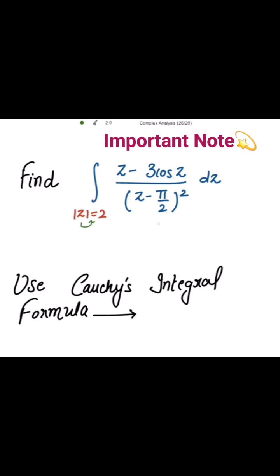For that, we need to check first that on putting the denominator equal to 0, what point we are getting. We are getting z equal to pi by 2.